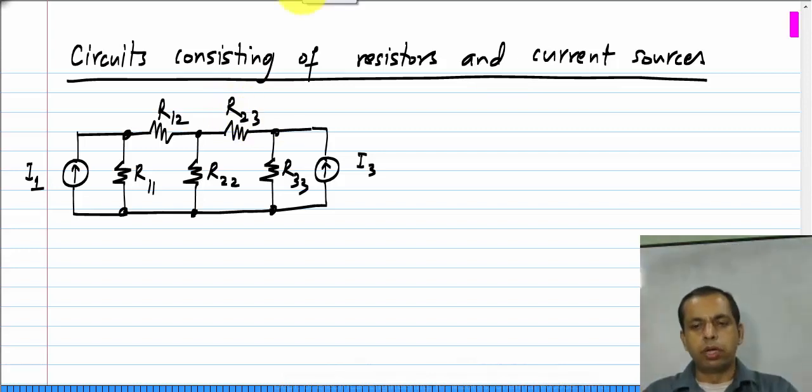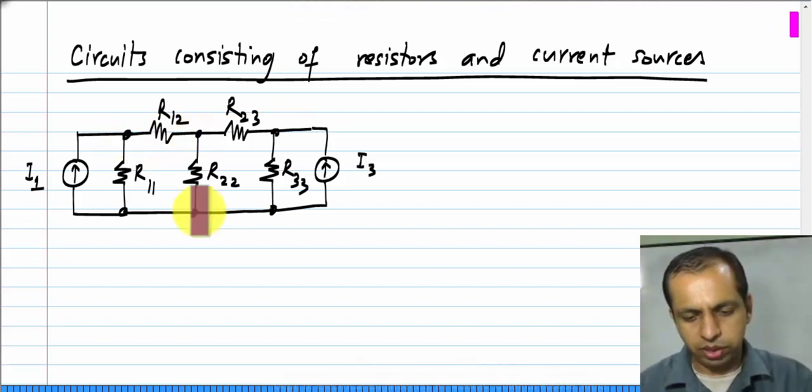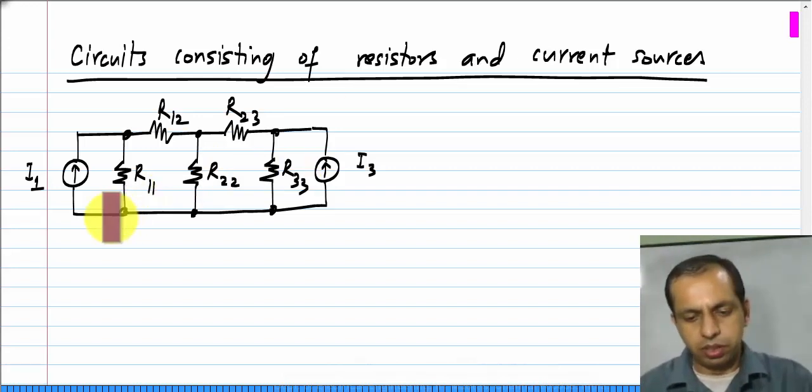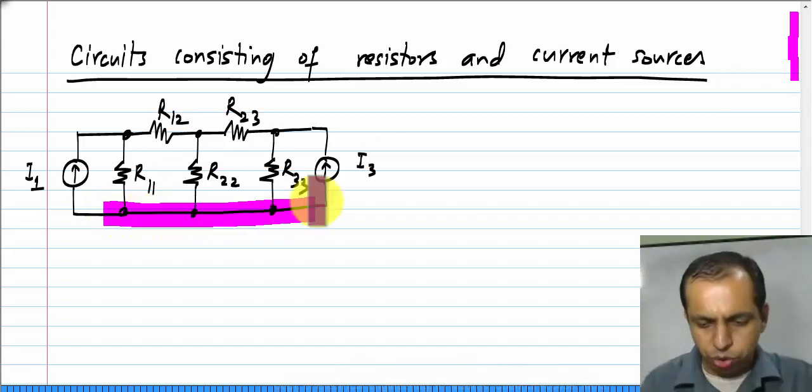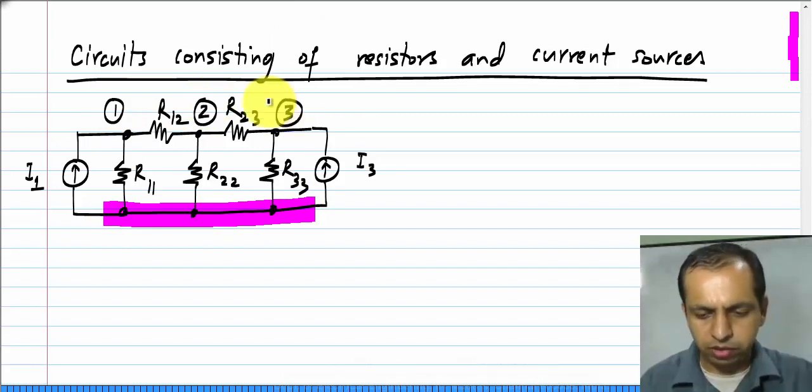So, now what do I write? When I write KCL equations, I look at every node. There are four nodes here, one, two, three and four. I choose any three of the four nodes and write KCL equations at all those nodes. Now, I have to omit one of the nodes while writing KCL equations. And in this example, I will choose to omit this one and write KCL equations at these three nodes which I will label one, two and three.